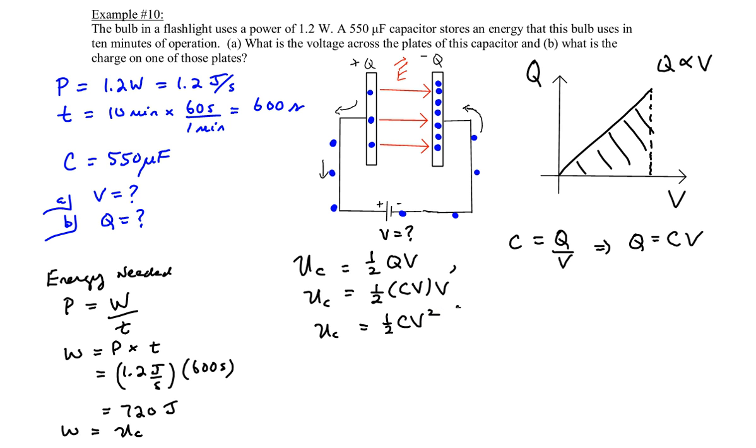Now we're solving for the voltage. So the voltage would be equal to 2 times the stored energy divided by the capacitance. That's what the voltage squared is. So it's 2 times 720 joules divided by the capacitance.